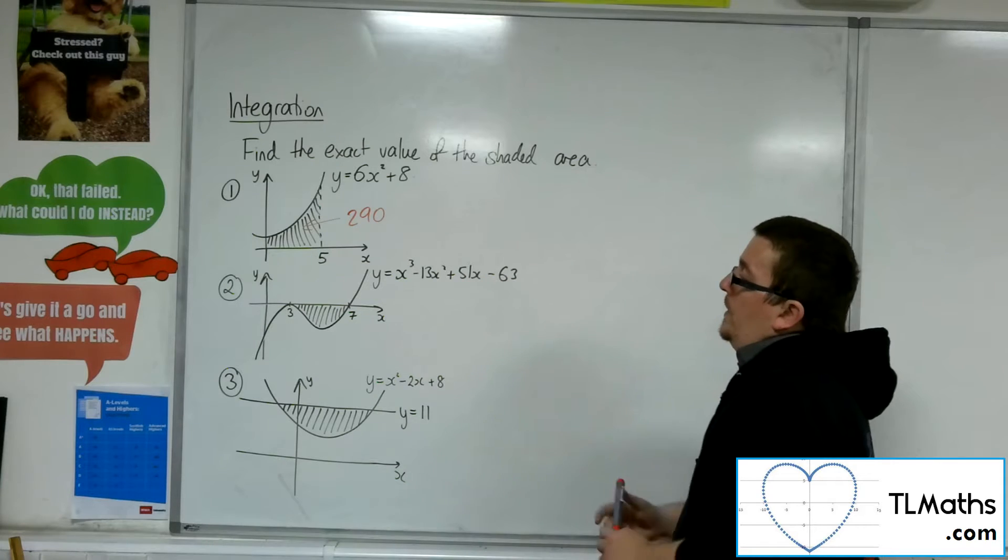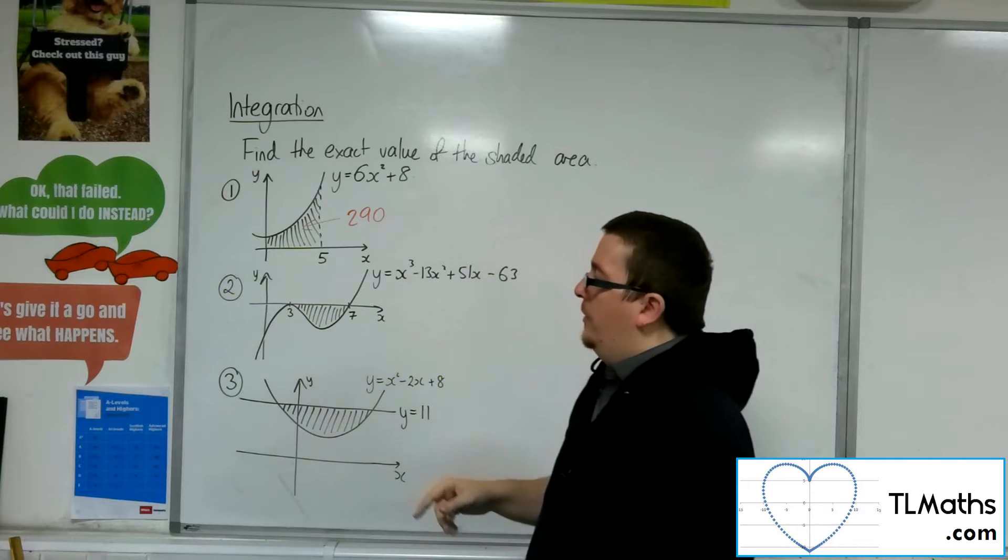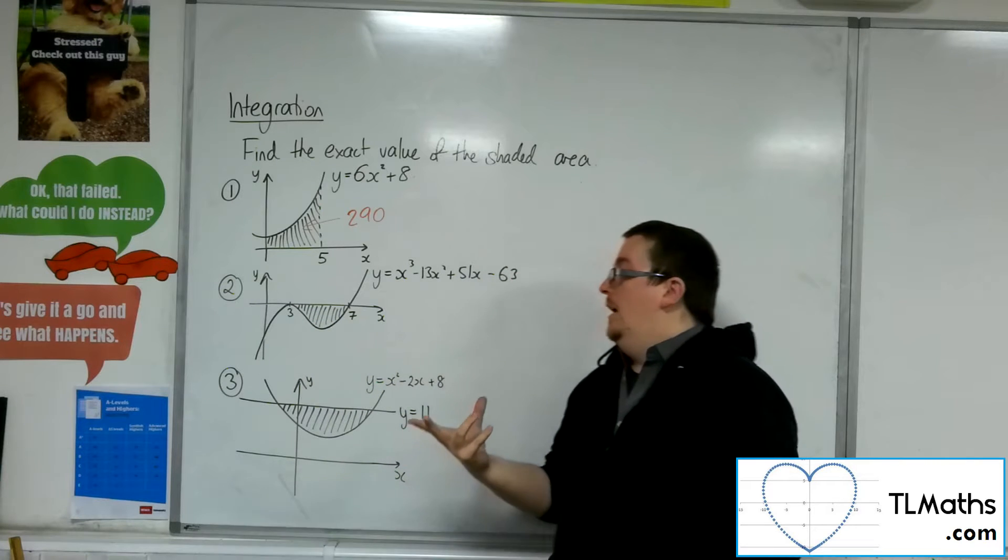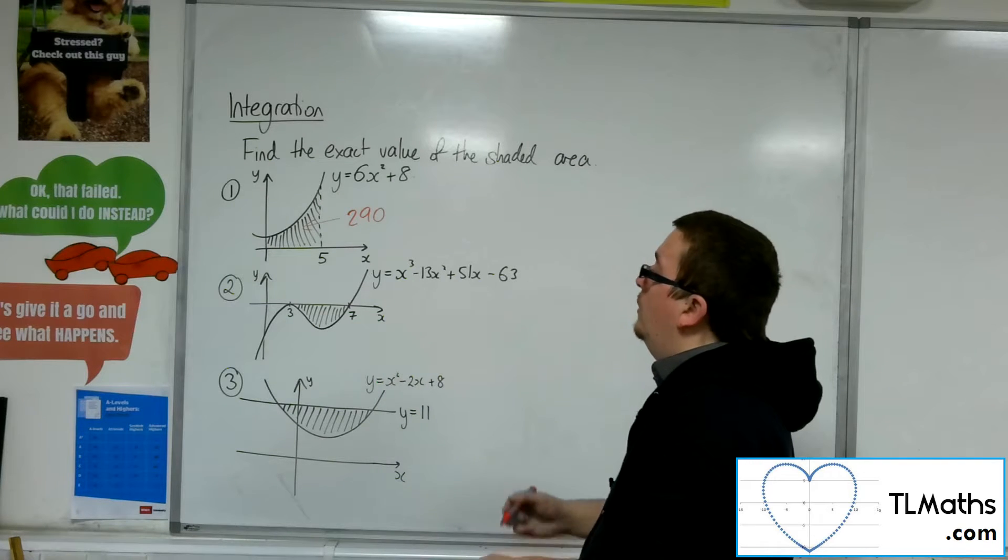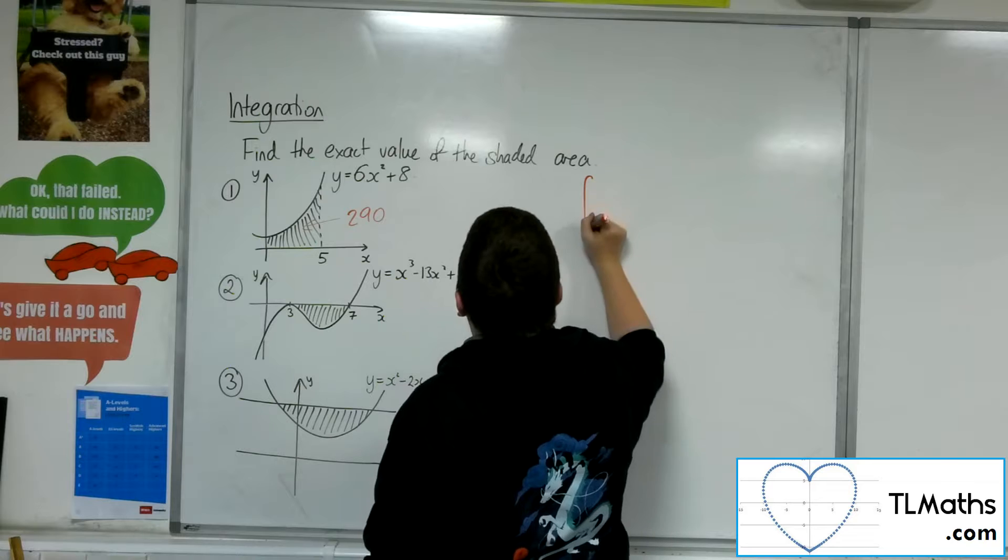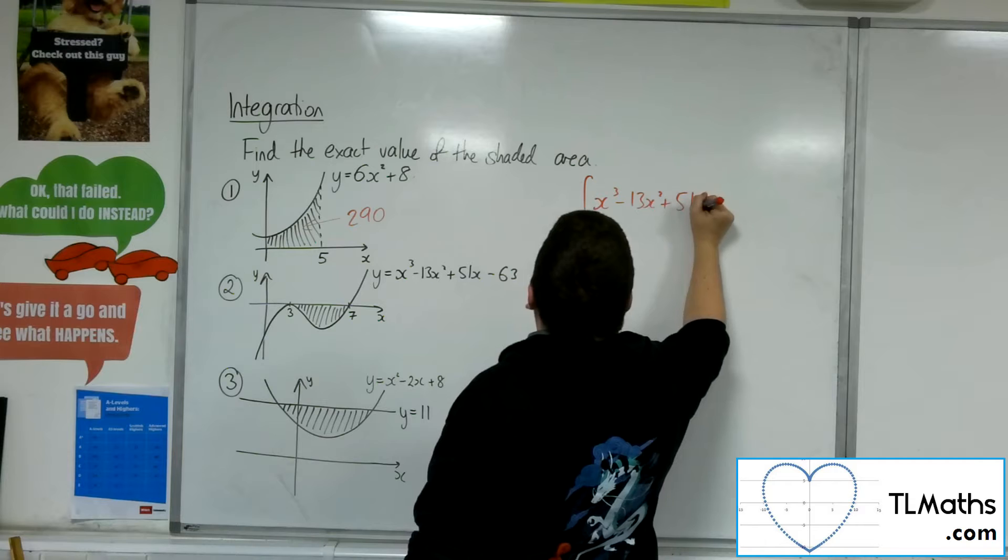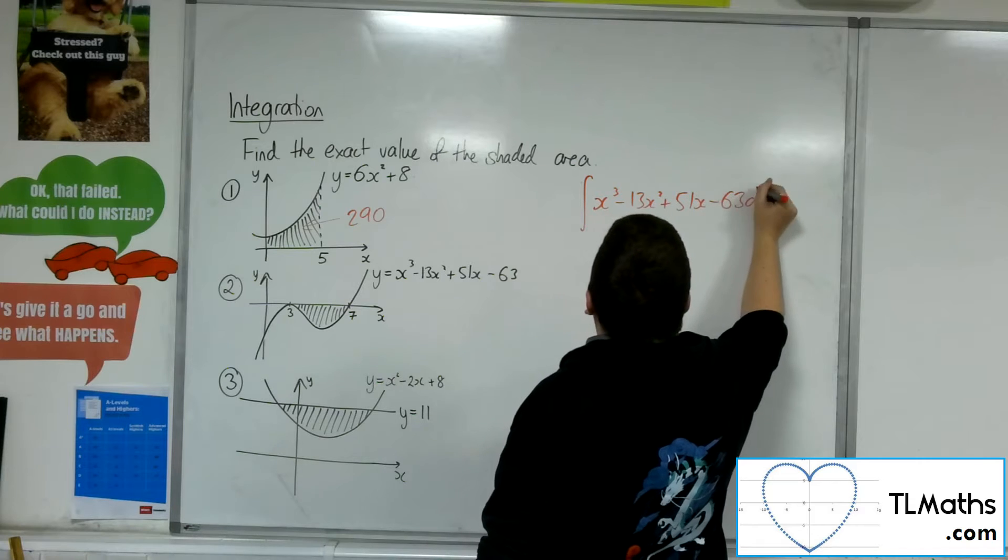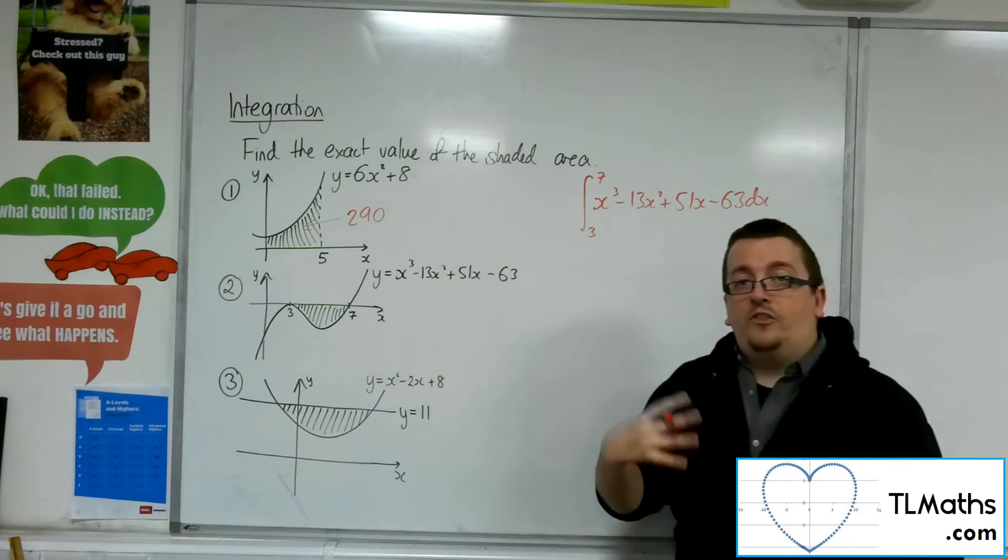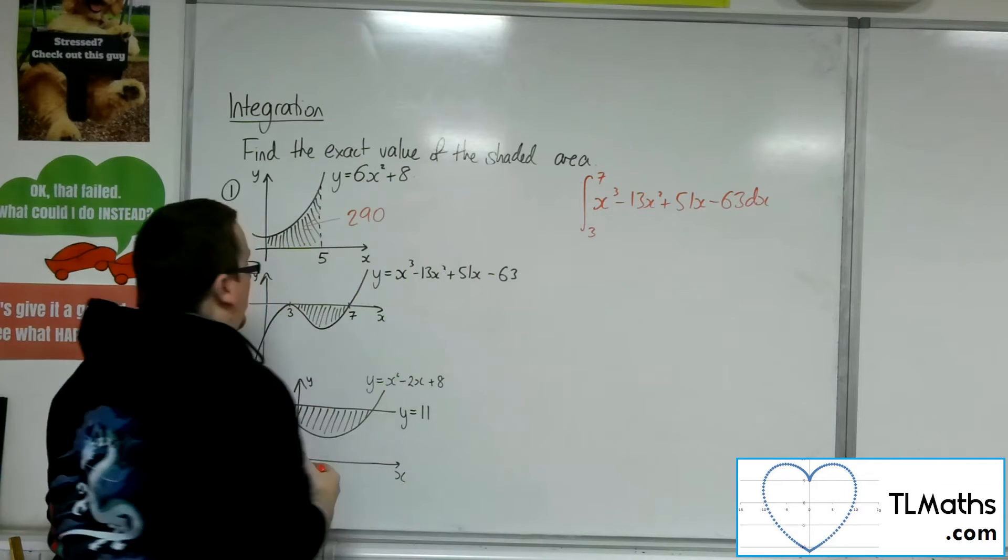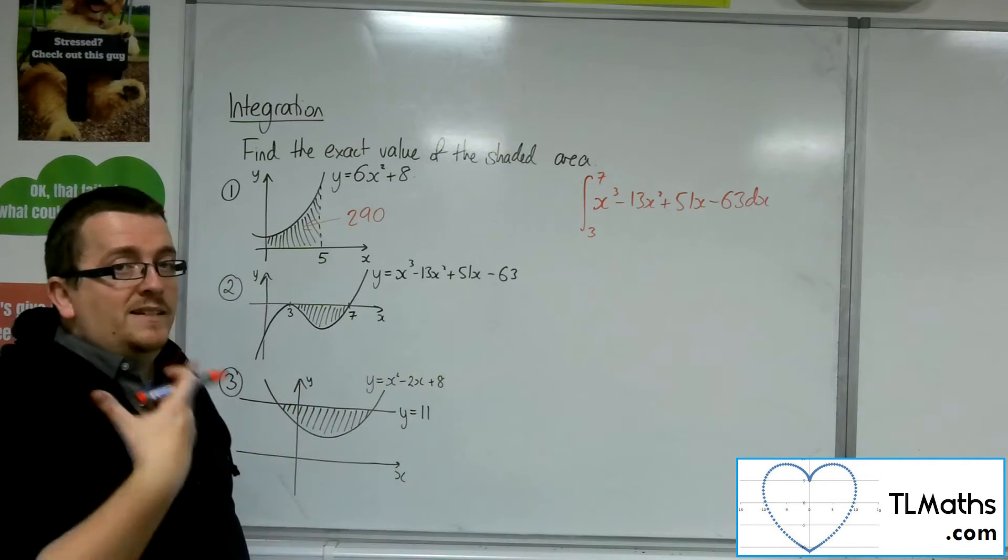Number 2, we have this cubic curve. It touches the x-axis at 3, so it's got a repeated factor of x minus 3, and it's crossing through 7 on the x-axis as well. What we're being asked to do is to integrate x cubed minus 13x squared plus 51x minus 63, and evaluate that between 3 and 7. Now, I'm expecting to get a negative result because it's below the x-axis, and then whatever result I get, I can make positive, and that will be the exact area.